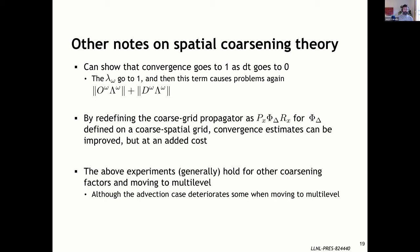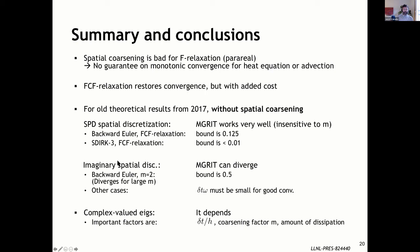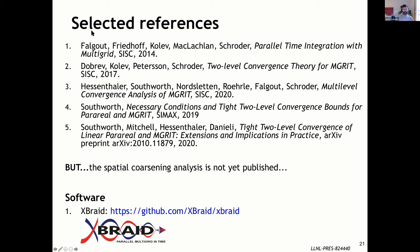In summary, spatial coarsening has a pretty negative impact for F-relaxation — equivalent to the parareal case and agreeing with Daniel's analysis — and we can't guarantee monotonic convergence in relatively straightforward cases. FCF relaxation can restore convergence, but with the added cost of doing more relaxation. This is followed by selected references on theory developments for MGRIT and the software used to generate the results.